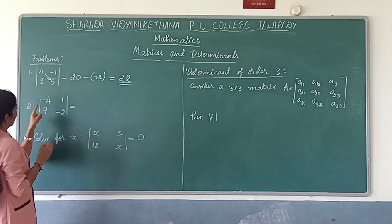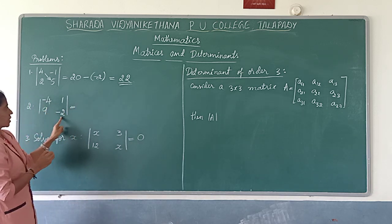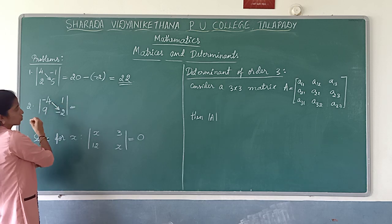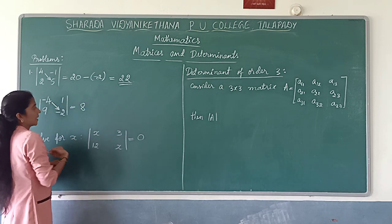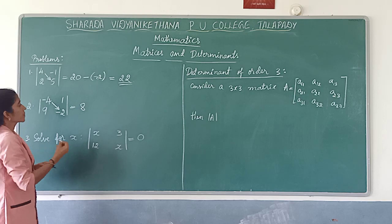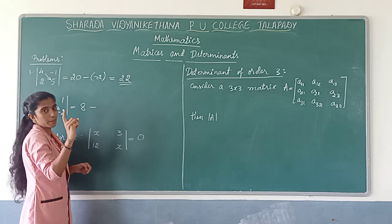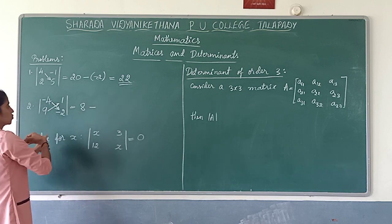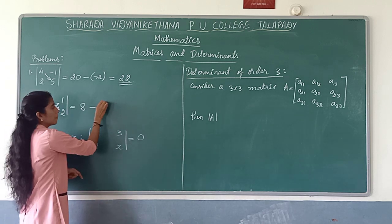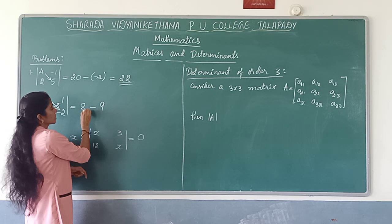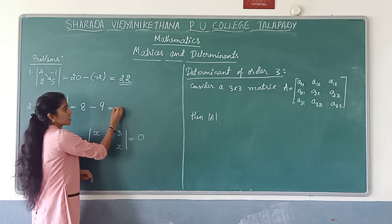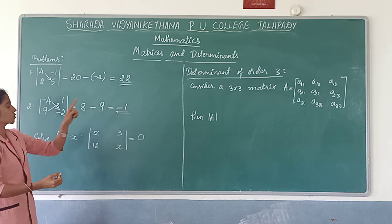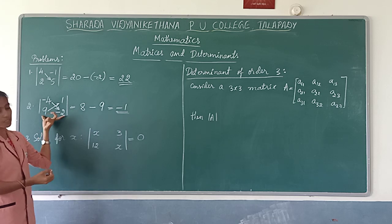Now the same way we have to find out this next determinant. 4 into minus 2 = minus 8, then minus sign in between, then 9 into 1 = plus 9. So it is 8 minus 9, which is minus 1. This is the determinant value of this given determinant.